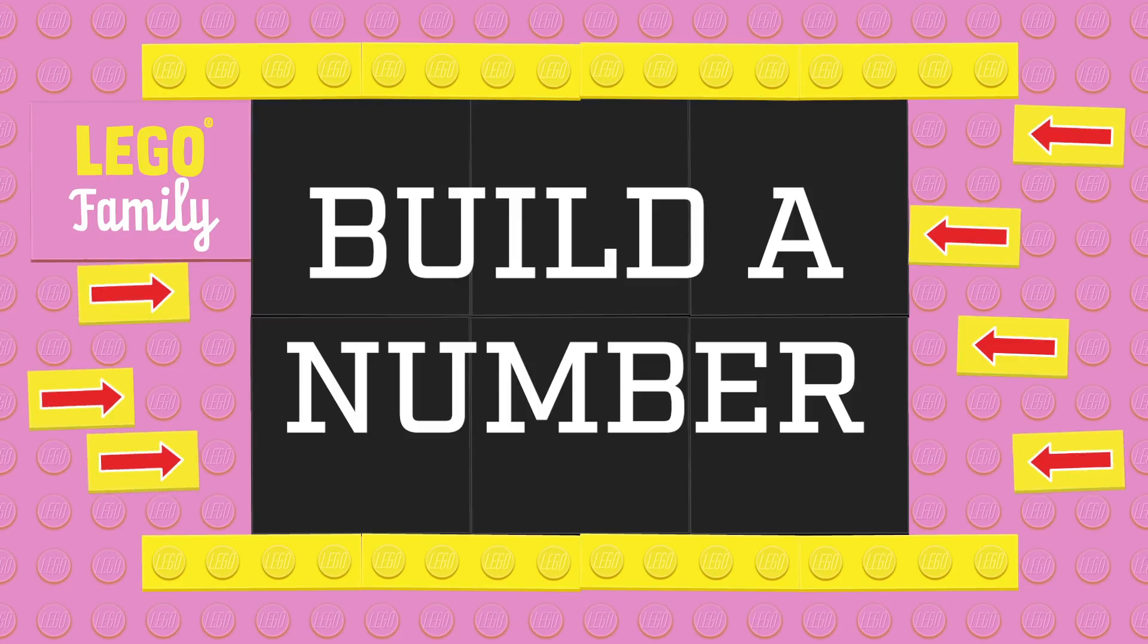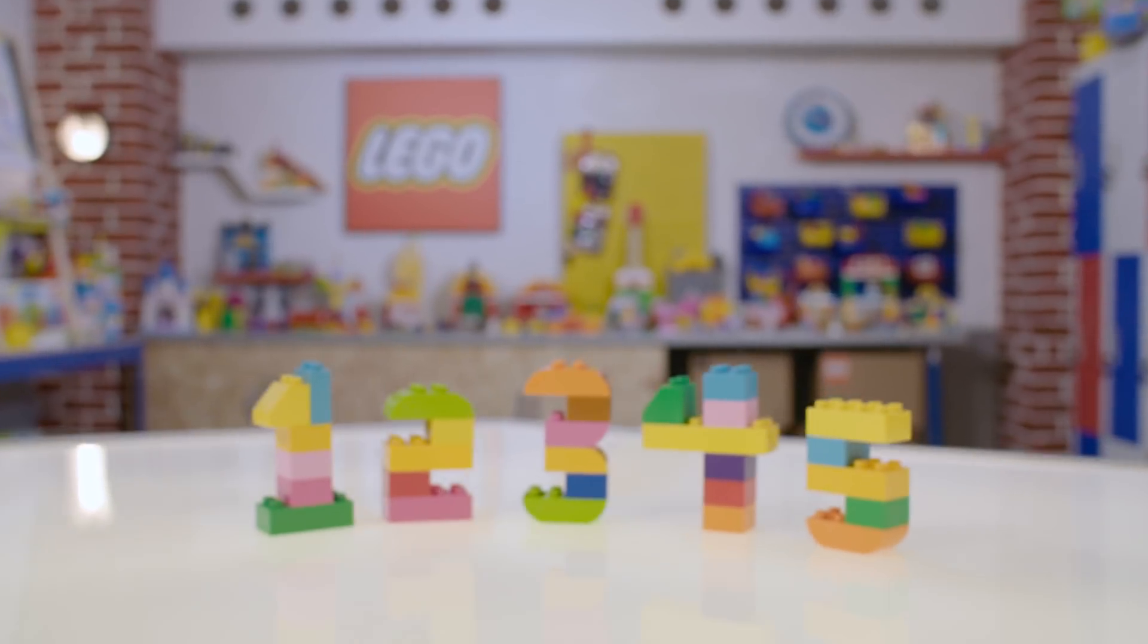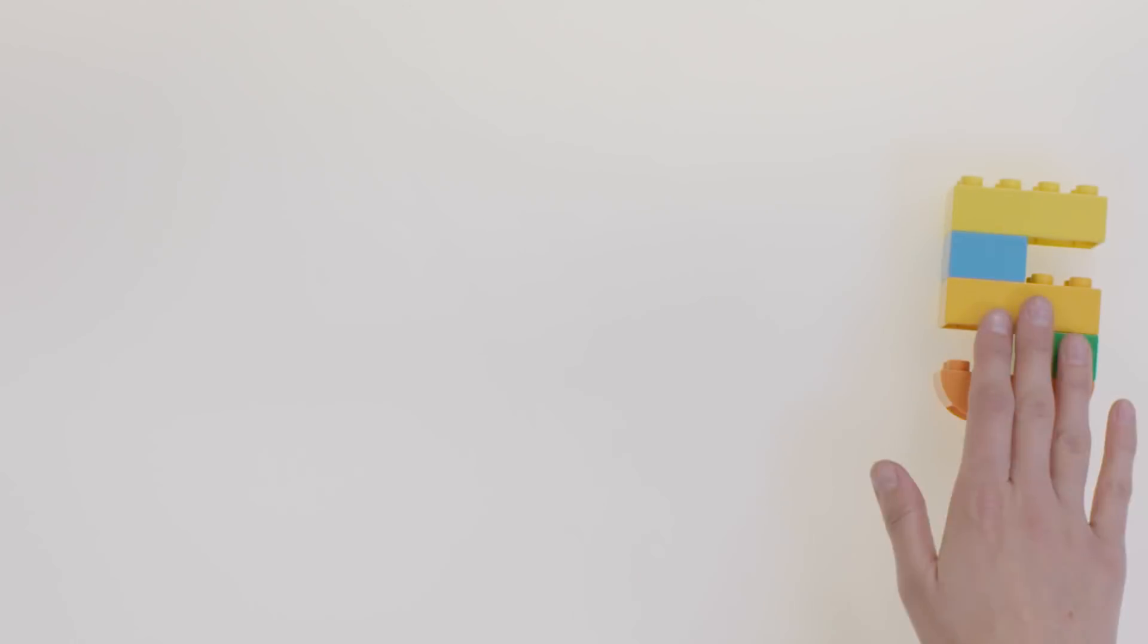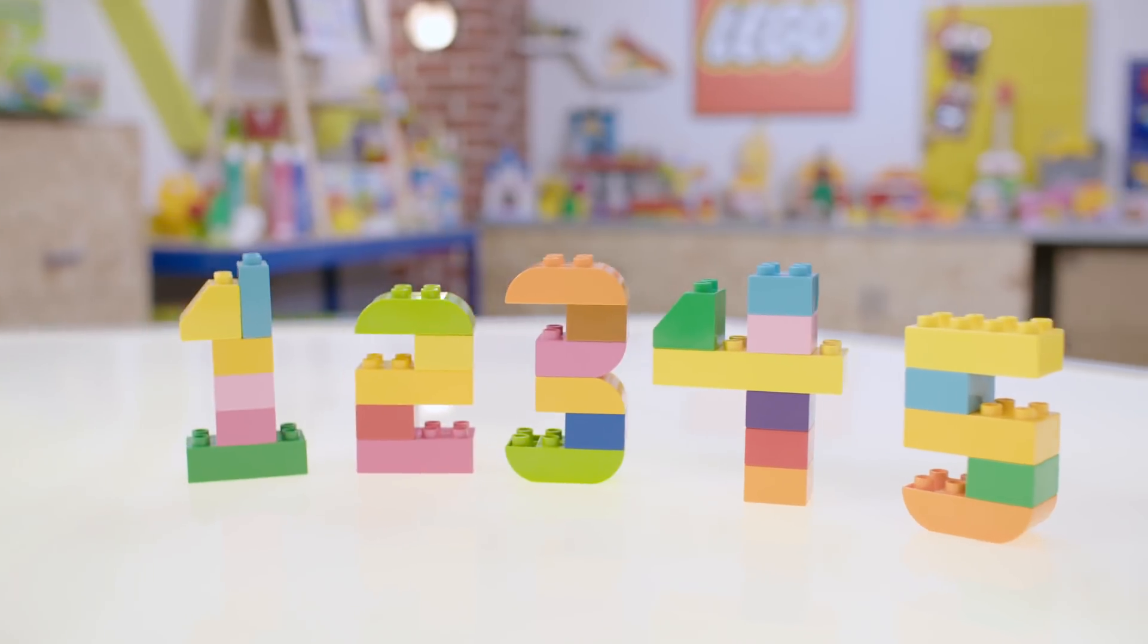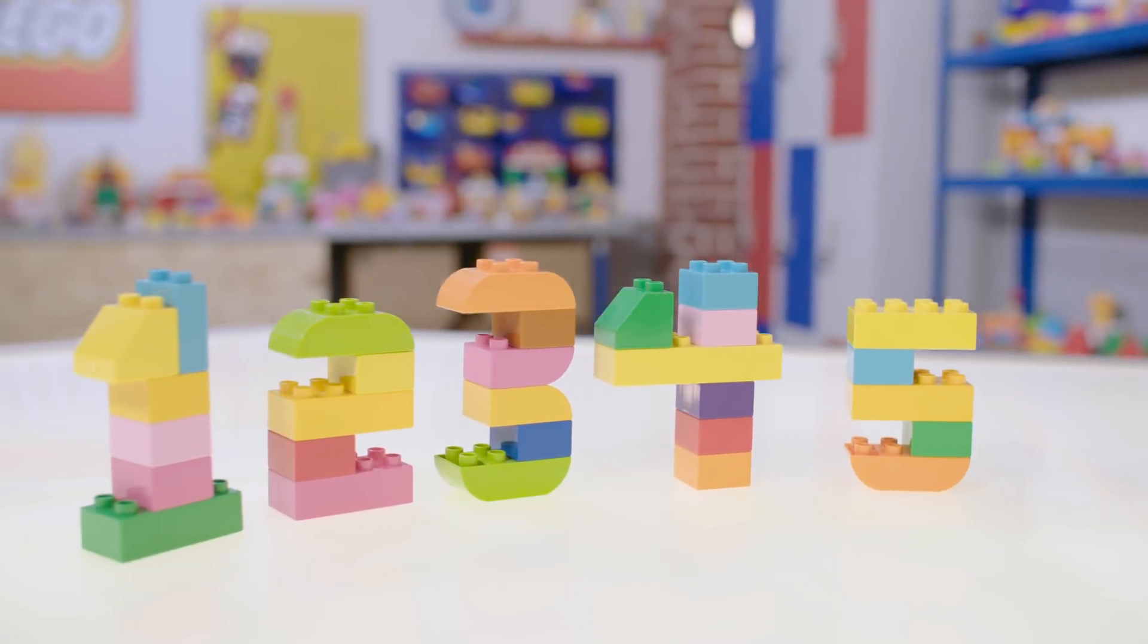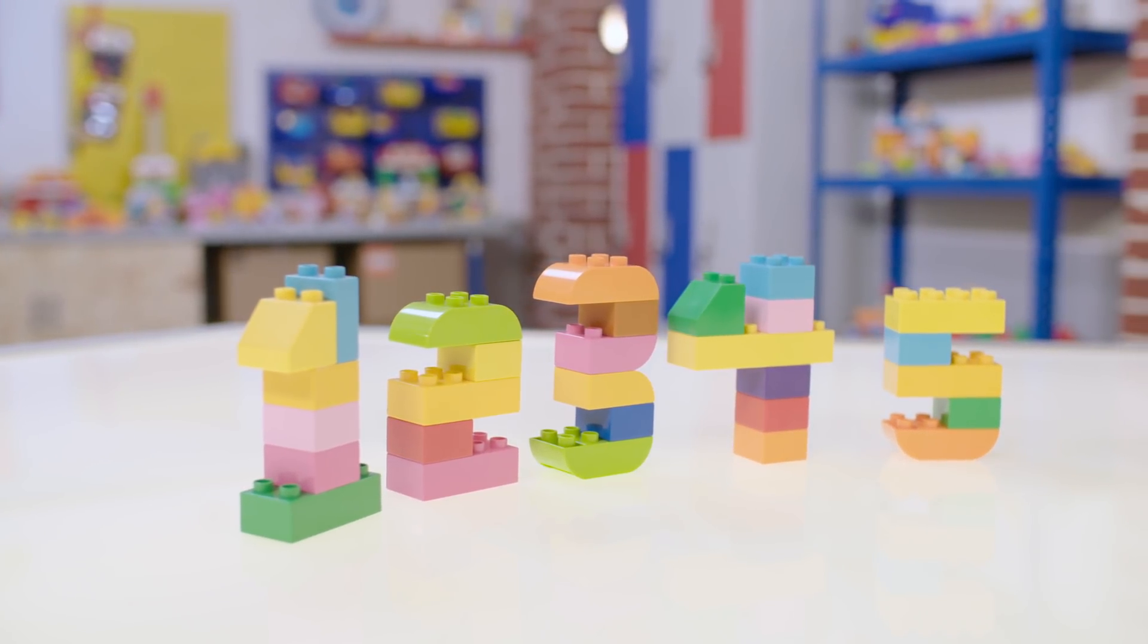Build a number. You can even help your child to build their very own LEGO Duplo numbers. Let's try a 5. These numbers can also make a great display piece for their birthday party or decoration for their bedroom.